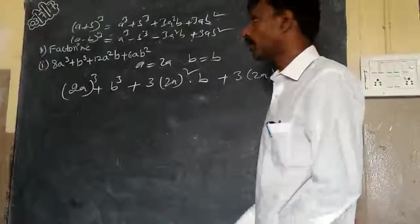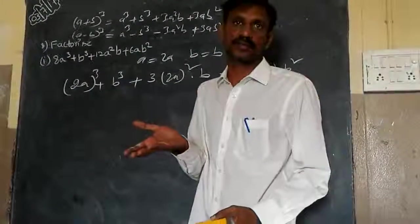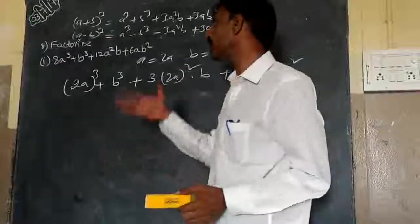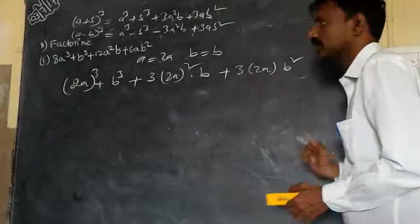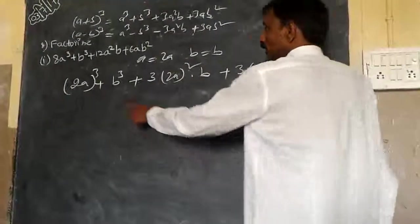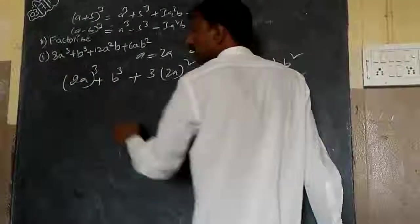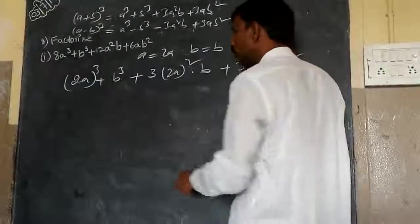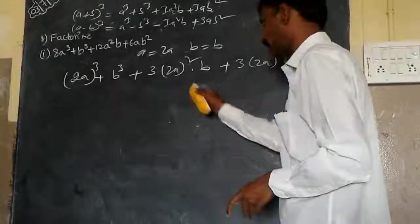Do you understand my point? First see the expression and you find out the suitable identity for the given expression and go through the formula. You write it down like this. Now it is as it is. Because (2a)³ is nothing but 8a³ only. b³ is nothing but b³. Whereas here and here you just simplify it.